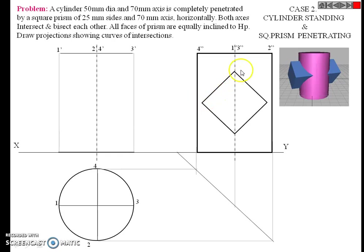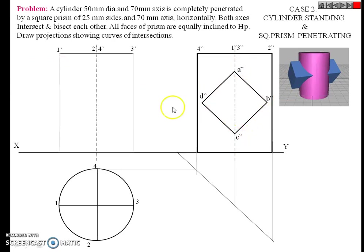The base of the second solid has a side of 25 mm. All sides of the base are equally inclined to HP — all sides make an angle of 45 degrees. Give the naming: A double-dash, B double-dash, C double-dash, D double-dash. This is the side view.